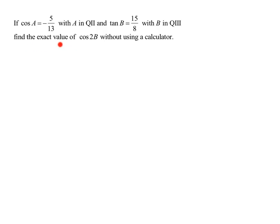And we need to find the exact value. Notice the word exact value of the cosine of 2B without using a calculator. So that means I'm going to have to use a double angle formula. So the cosine of 2B, this is the one that has three different versions. I could use cosine squared B minus sine squared B. I could use 2 cosine squared B minus 1. Or I could use 1 minus 2 sine squared B.